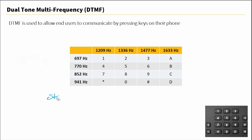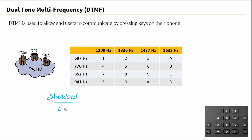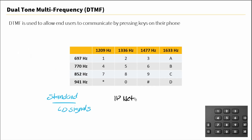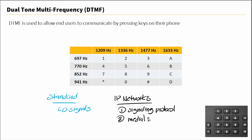Over standard PSTN networks, DTMF is transferred through signals. Now over IP networks, like Voice over IP, DTMF is either transmitted via the signaling protocol being used, or within the media, or RTP packets.